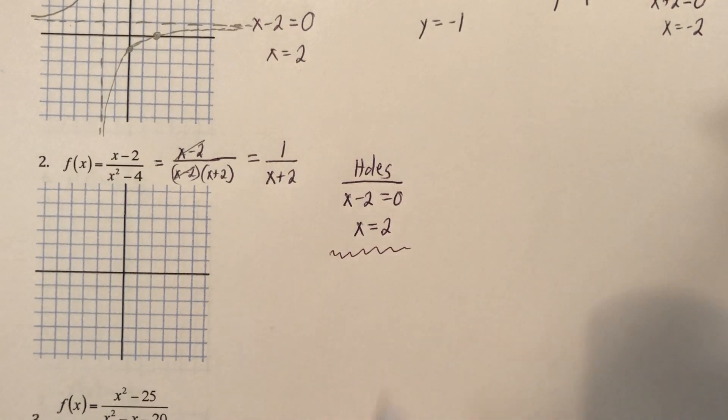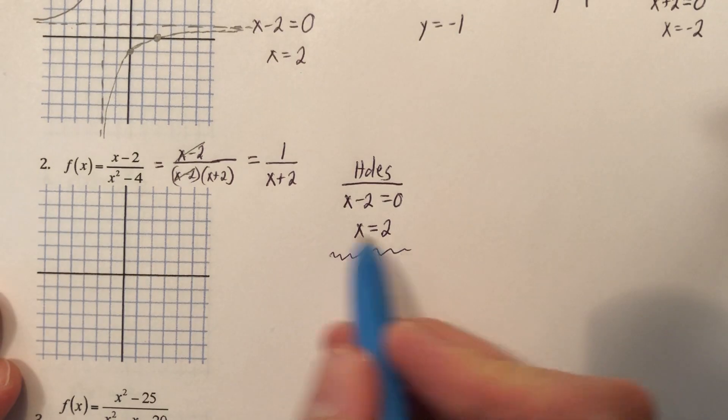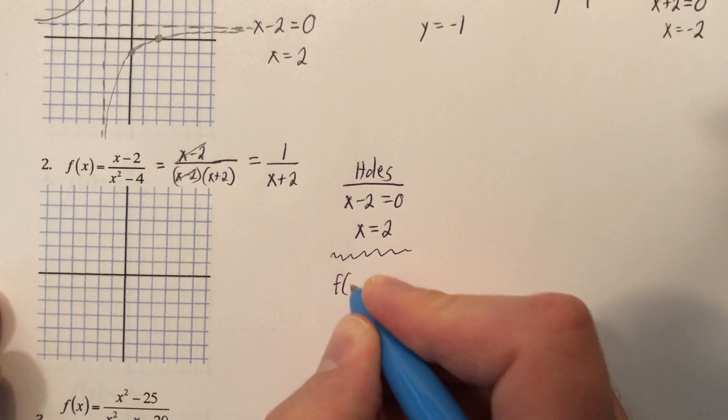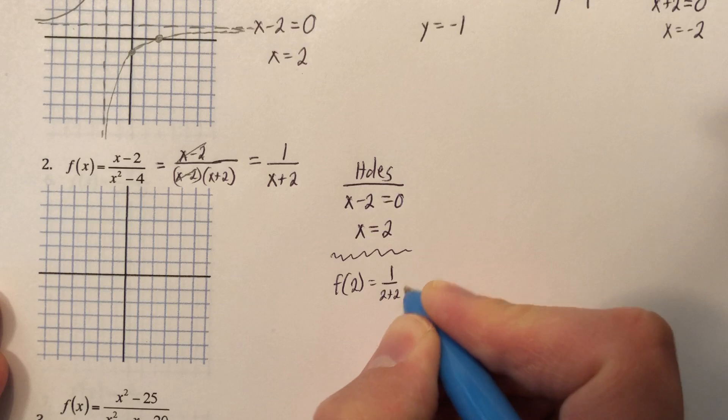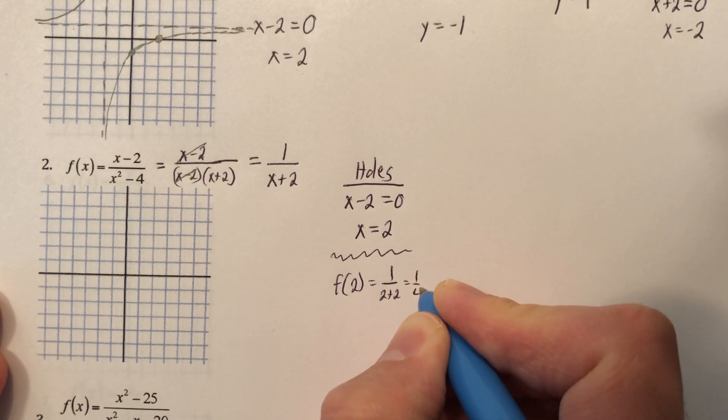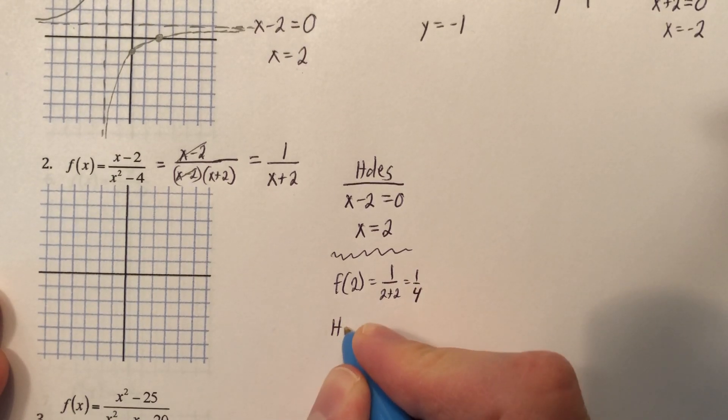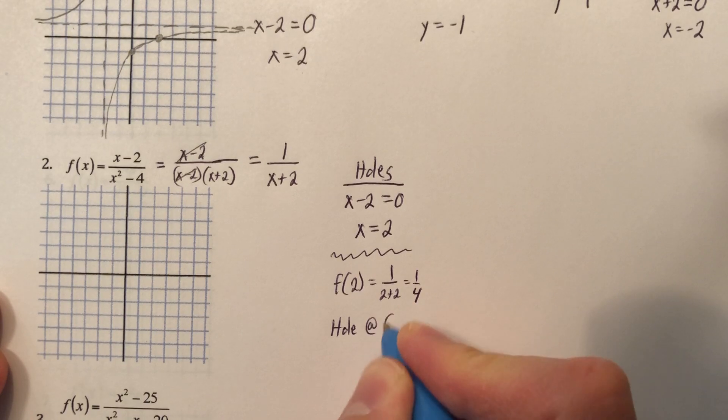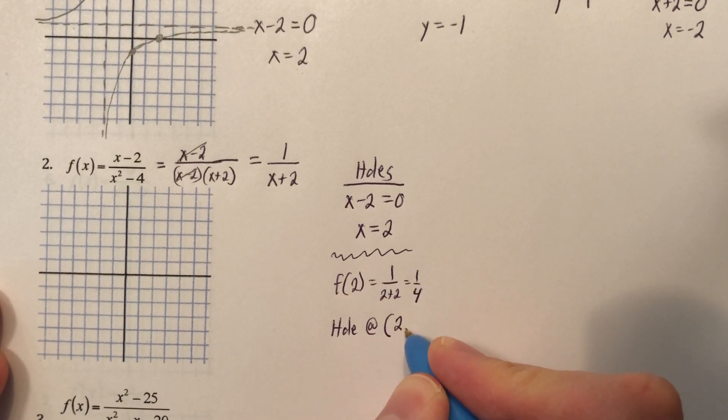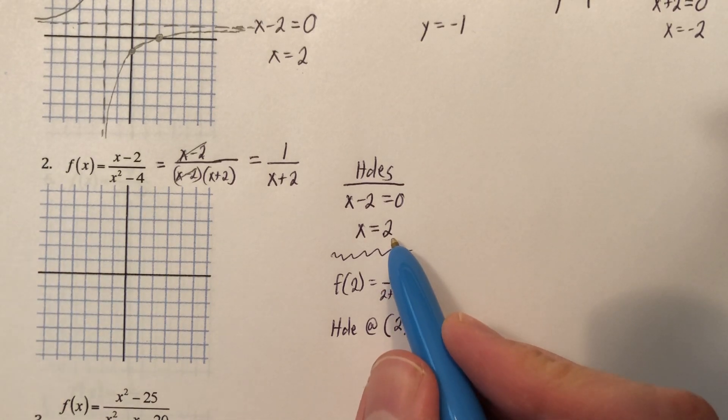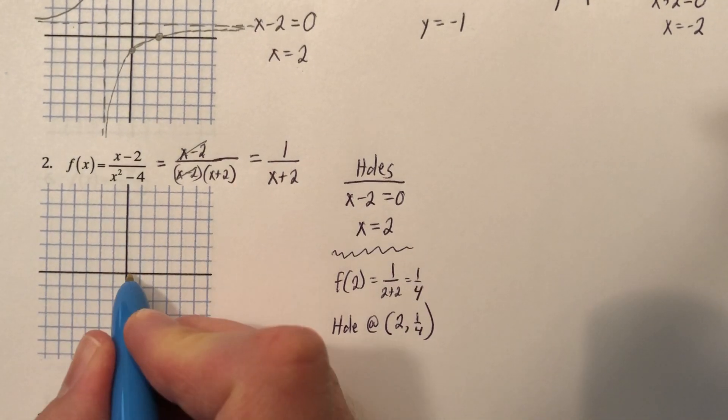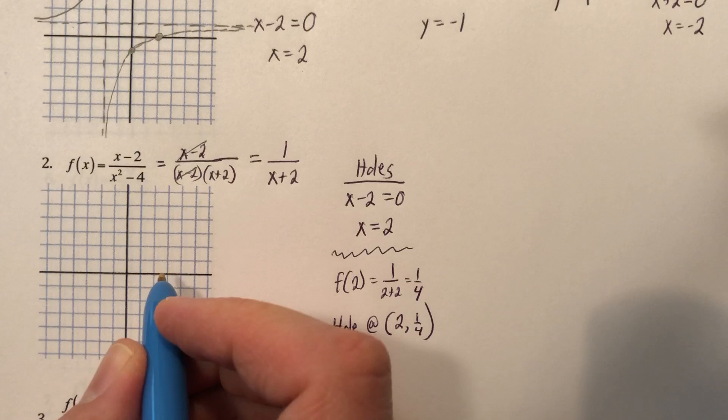So I'm going to plug 2 back in. Don't panic about this part. f(2) is going to be 1 over 2 plus 2, and that's going to give me 1 fourth. So I have, final answer, I have a hole at 2 comma 1 fourth. I got that 1 fourth just by plugging in the x value.